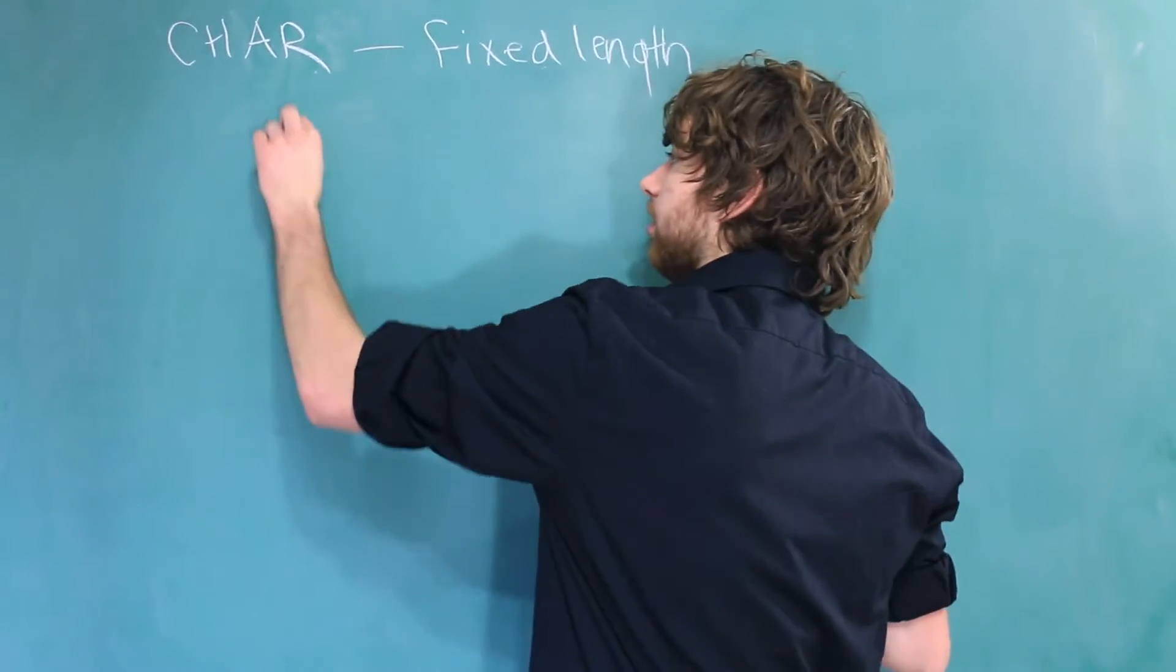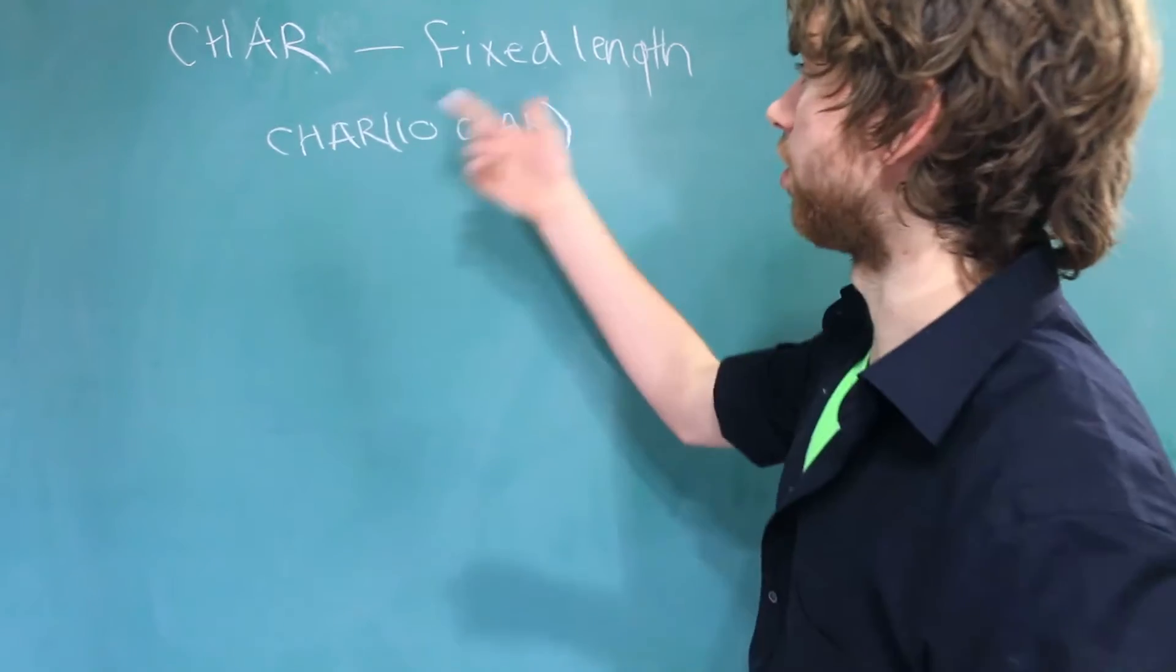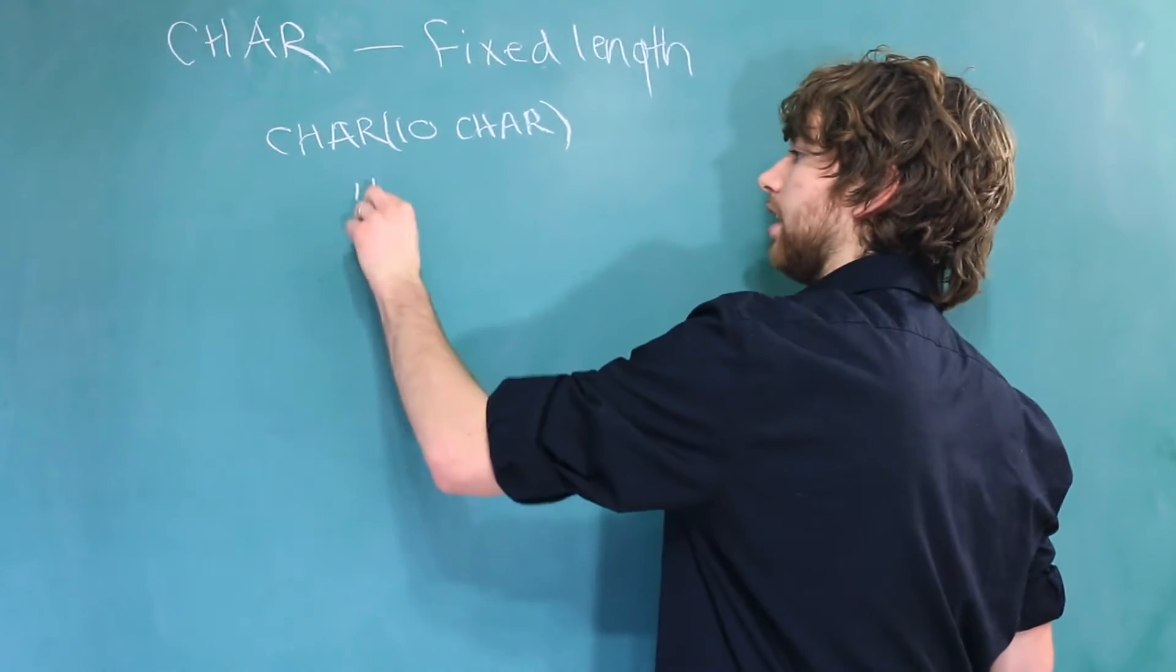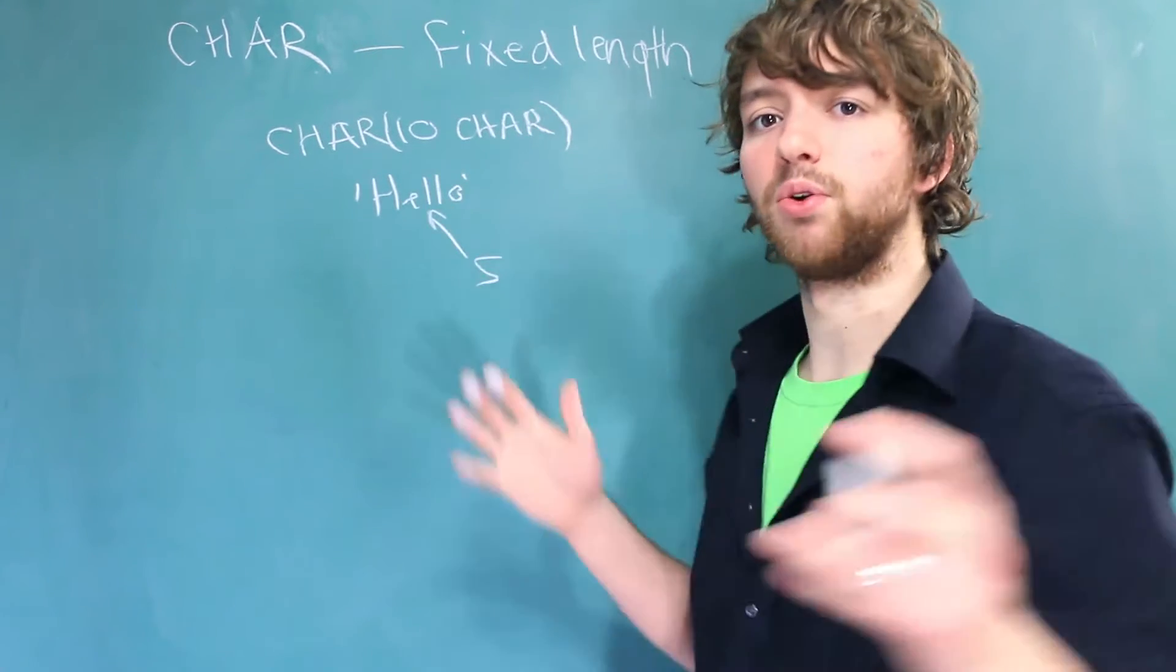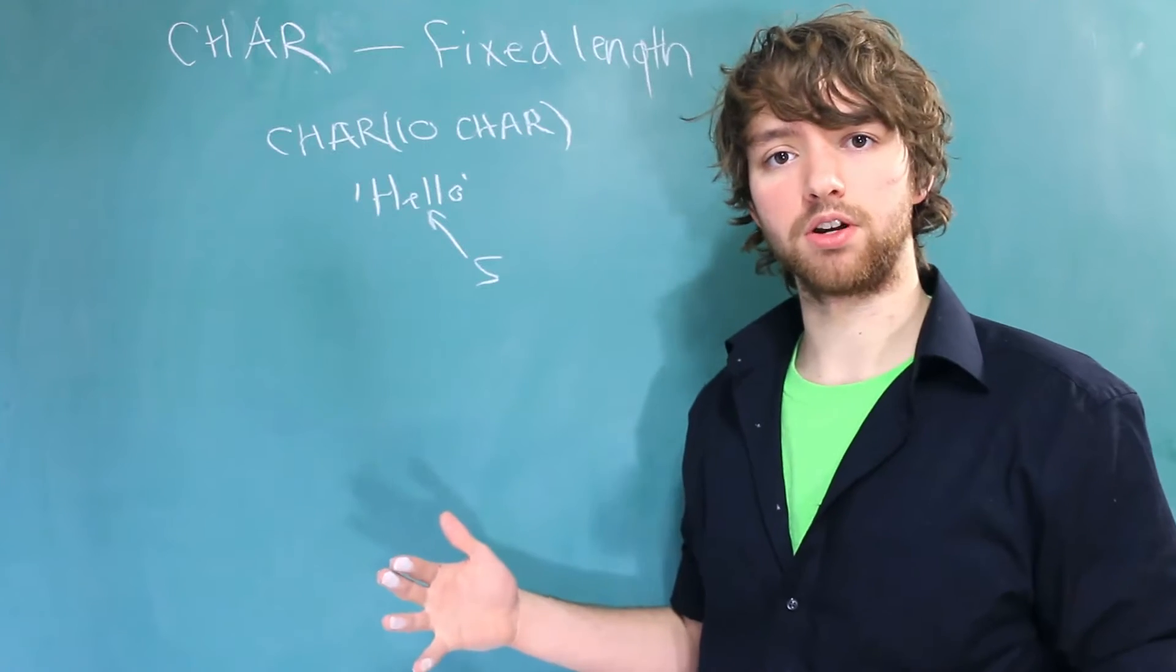So for example, if we have something like char 10 char but we only pass in hello, well hello is only five characters. That means it's going to add five spaces for us.